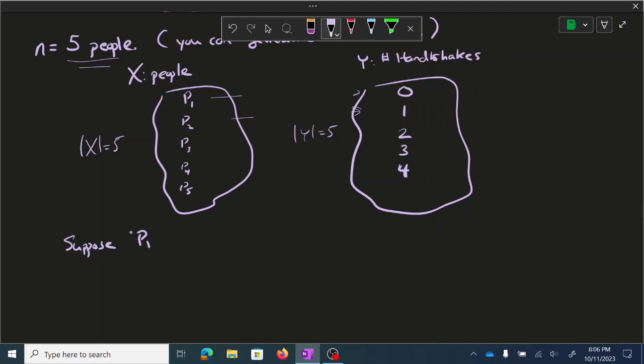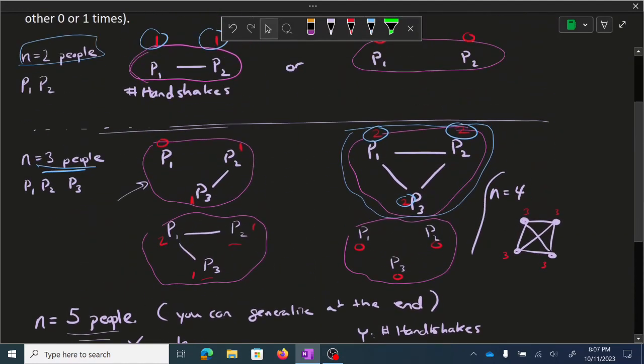And the subtlety is if we do have someone that decides to opt out. So P1 decides to opt out. Then F of P1 equals zero. Okay. Then something, I wouldn't say strange, but with a little bit of thinking, you can convince yourself that four, it will no longer be obtainable. So what do I mean by that?